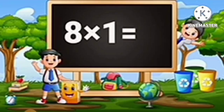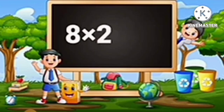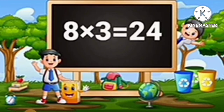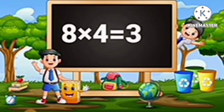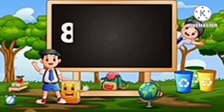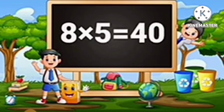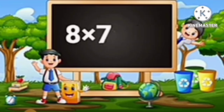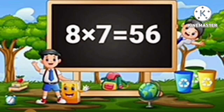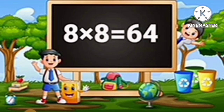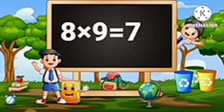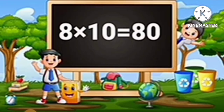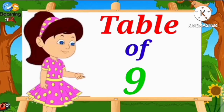Table of 8: 8 ones are 8, 8 twos are 16, 8 threes are 24, 8 fours are 32, 8 fives are 40, 8 sixes are 48, 8 sevens are 56, 8 eights are 64, 8 nines are 72, 8 tens are 80.